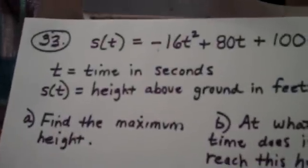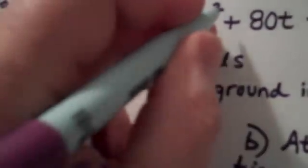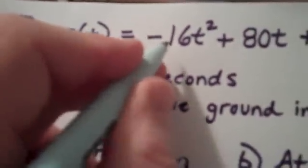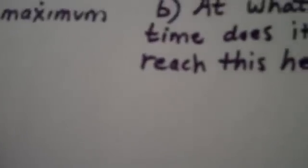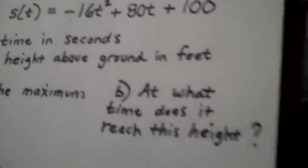Keep this in mind. This position function represents a parabola because it's degree 2, whose leading coefficient is negative, so it opens down. Where is the maximum going to occur? Well, of course, it will occur at the vertex. So what we're really being asked to locate here is the vertex.